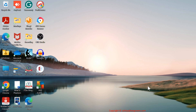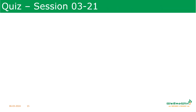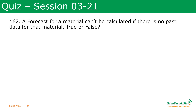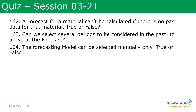In this session we discussed various parameters involved in the Forecasting View — like forecast model selection, the periods involved in forecast model selection, and the control parameters needed. As mentioned, you should know statistical calculations to use this forecasting view in the right way. Now let us see some quiz questions. Quiz 1: Forecast for a material cannot be calculated if there is no past data for the material — true or false? Quiz 2: Can we select the number of periods to be considered from the past to arrive at the forecast, and can the forecasting model be selected manually only — true or false?